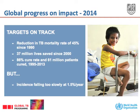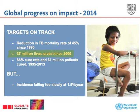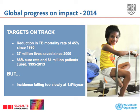This slide shows the summary of global progress on impact. The reduction in TB mortality rate was 45% since 1990 — almost half. 37 million lives have been saved, and 86% is now the cure rate among TB patients around the world.